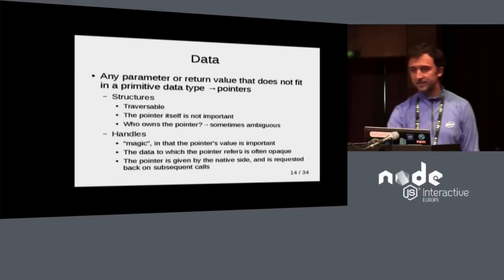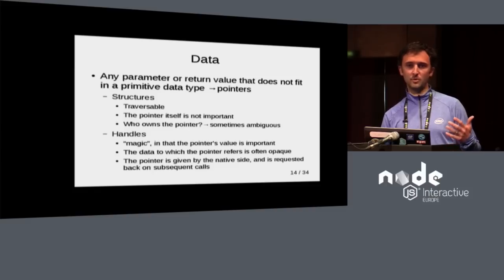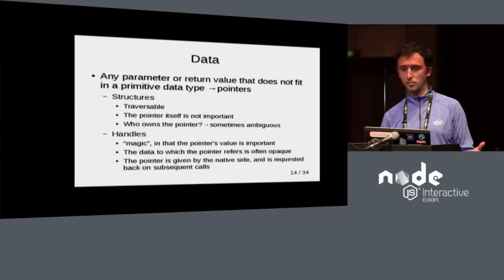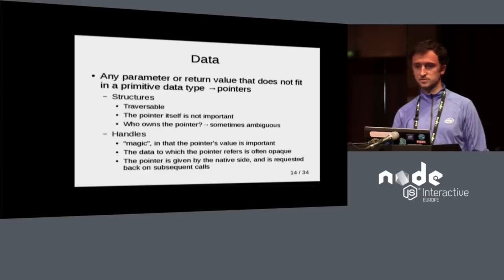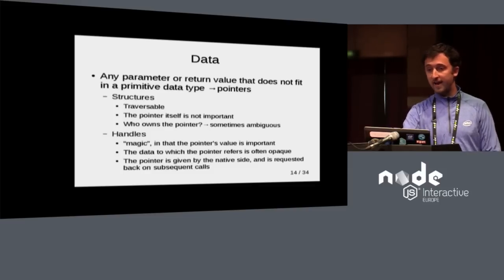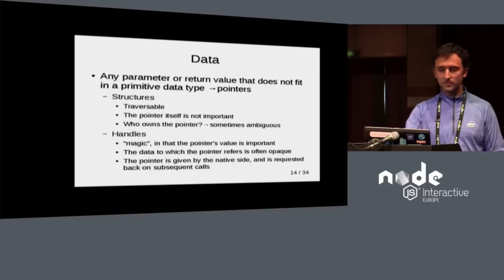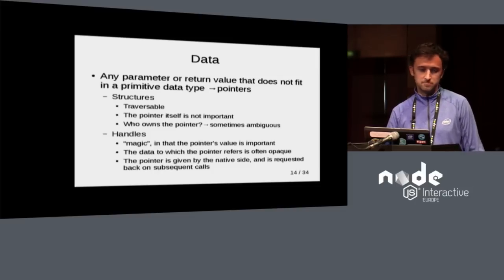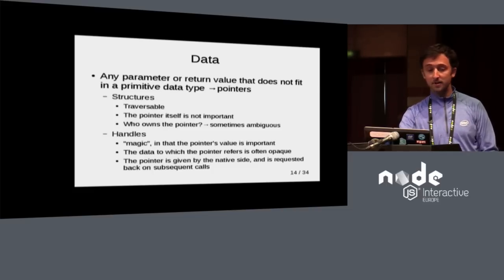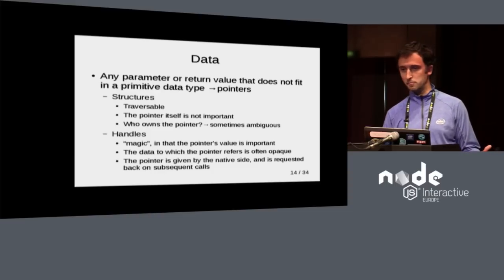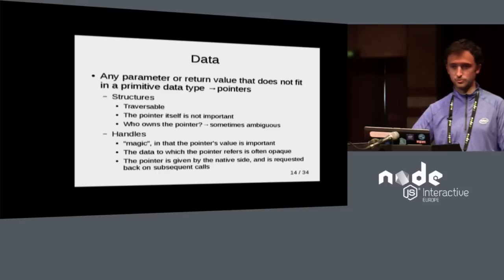When dealing with data, things stop being simple because now you're dealing with pointers. When wrapping a library, you usually have two kinds of pointers. One kind is where the pointer itself is not that important but conveys data which exceeds the size of a primitive value — you're interested in the contents of the structure, not where it's stored. The second kind is like a handle, which is very often found in C libraries — like a file pointer from fopen. Pretty much all libraries have these handles, and they're usually opaque structures.